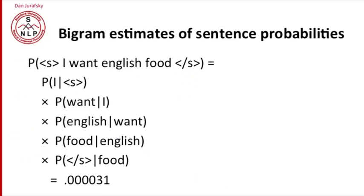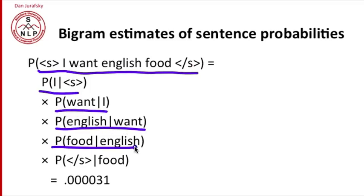Now that we've computed all of our bigram probabilities, we can estimate the probability of a sentence, that's our goal for language modeling, simply by multiplying together all the component probabilities. So the probability of start of sentence, I want English food, end of sentence is the probability of I given start times the probability of want given I times the probability of English given want, food given English, start given food, and so on.